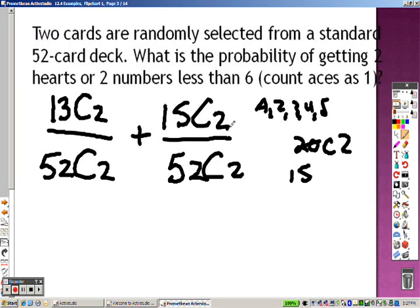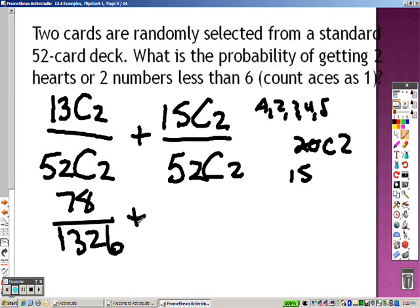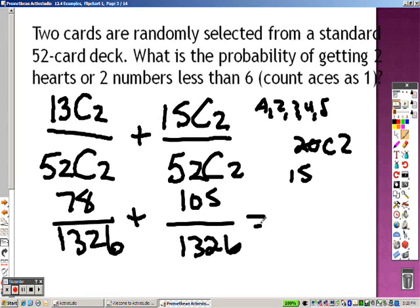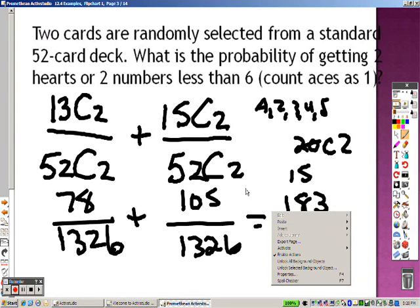So when we're doing this, we end up getting, let's take a look here, 13C2 is 78. And let's see what else we get here, 52C2 is 1,326. And let's see what else here, 15C2 is 105, and that's 1,326. So when we add those together, we end up getting 183 over, here we go, let's get right out, 183 over 1,326.